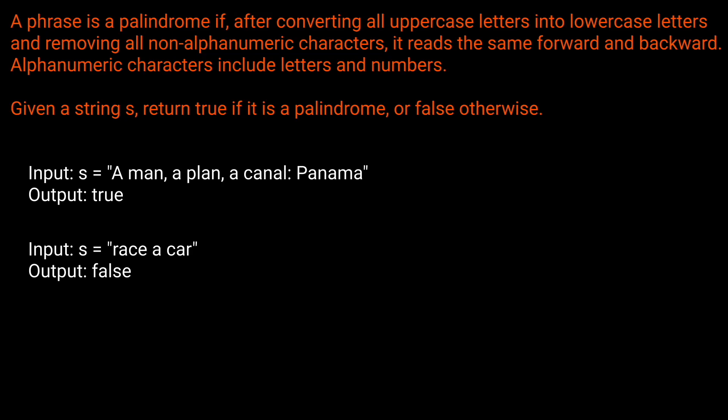Now that we've read the problem statement, let's go through the examples. If we're given the string 'a man, a plan, a canal, Panama', the output should be true. A palindrome is a string that reads the same forward and backwards, and in this case we want to remove all non-alphanumeric characters and disregard uppercase and lowercase differences. Let's go through this character by character and show why this is a palindrome.